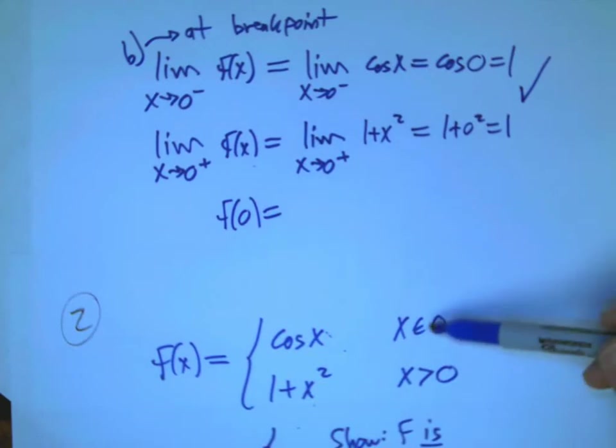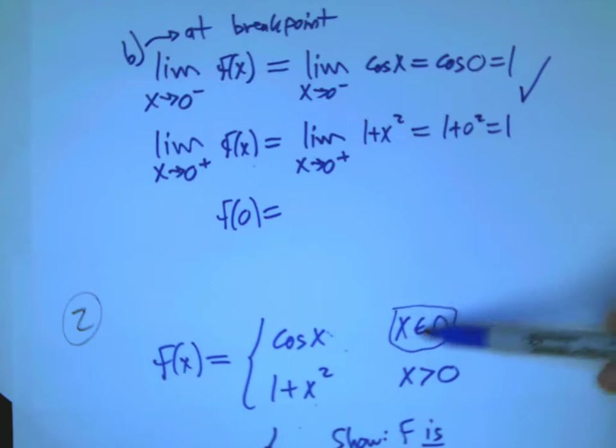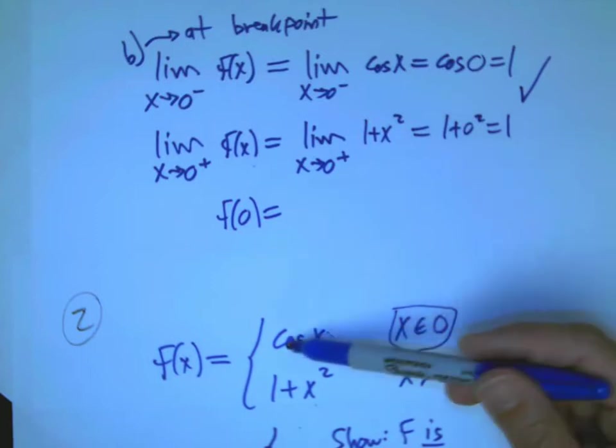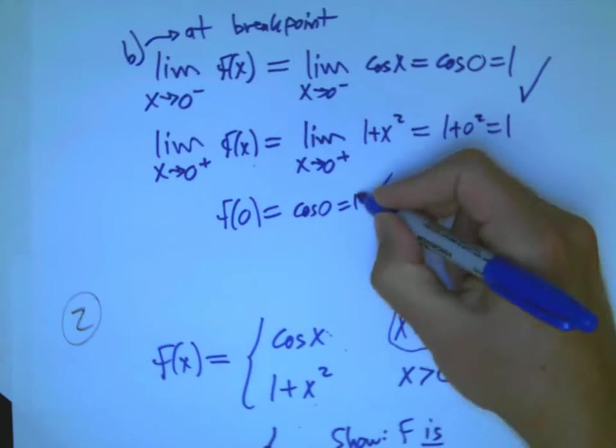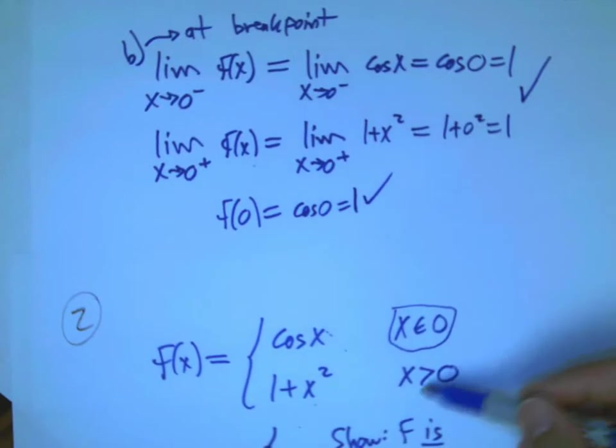Now, they're equal. And let's just make sure f of 0, that had better be the same value too. Well, f of 0, that's where we look here. We say, oh, that happens to be in this case. And that's cosine 0 equals 1. Good.